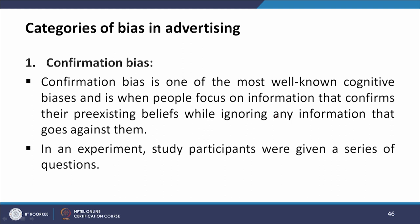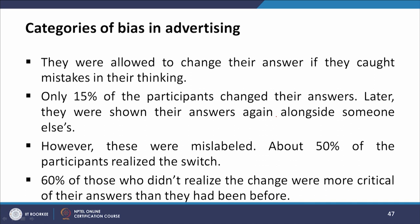In an experiment, study participants were given a series of questions and were allowed to change their answers if they caught mistakes in their thinking. Only 15 percent of the participants changed their answers. Later, they were shown their answers again alongside someone else's answers, though these were mislabeled. About 50 percent of the participants realized the switch, and 60 percent of those who did not realize the change were more critical of their own answers than they had been before.